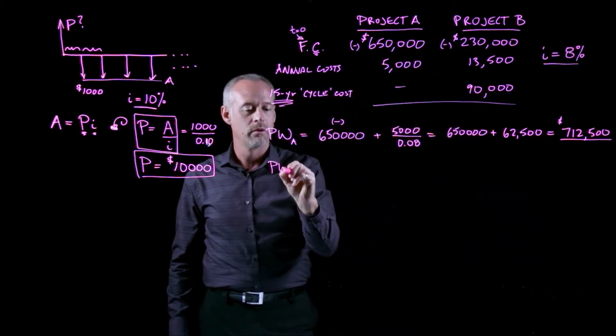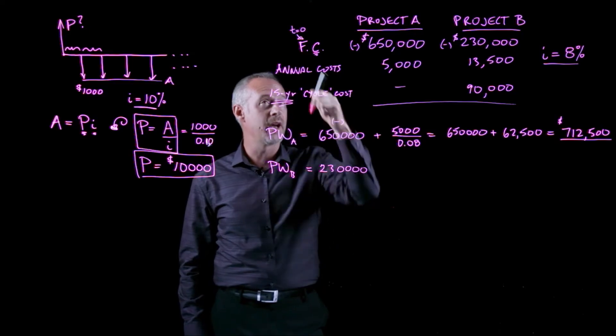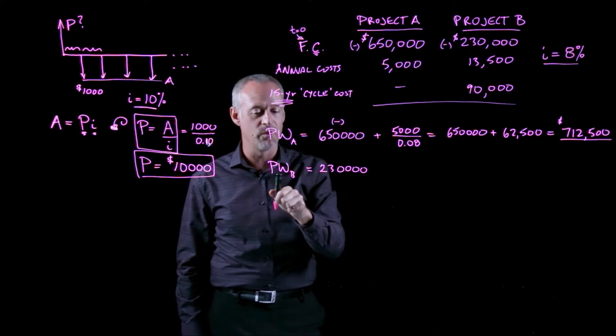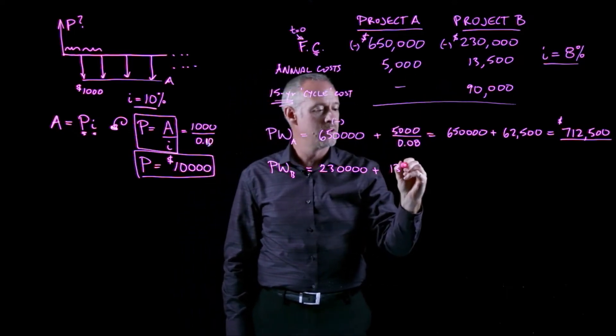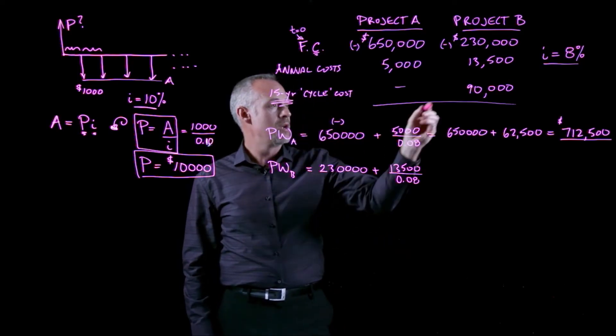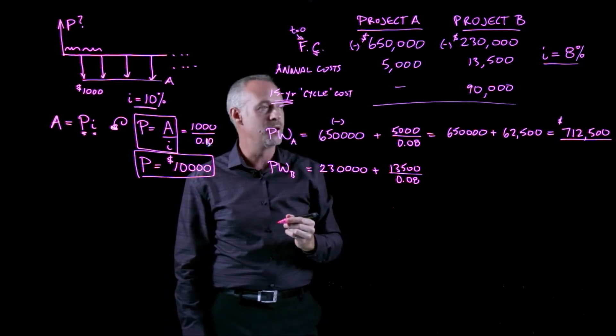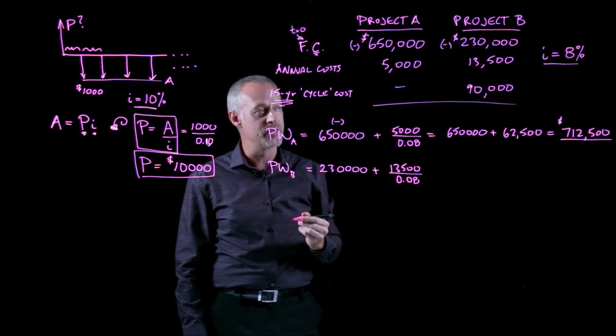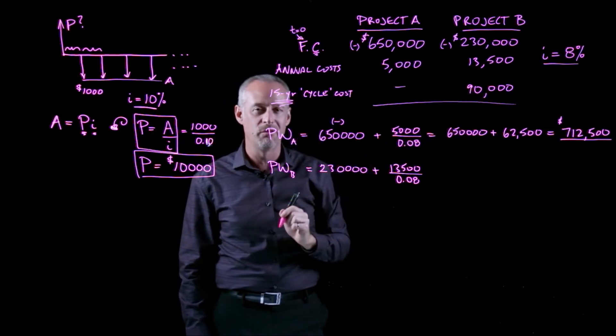Now, the present worth of project B is somewhat similar. So I have $230,000 as the first cost. That's my t equal to 0. So I don't need to do any type of manipulation. This is already at time t equal to 0. That's the present. Plus, I already know what to do with my annual costs. It's the same thing. I have my $13,500, in this case, divided by the interest rate. Here's the challenge. What do I do with $90,000 that occurs only every 15 years?